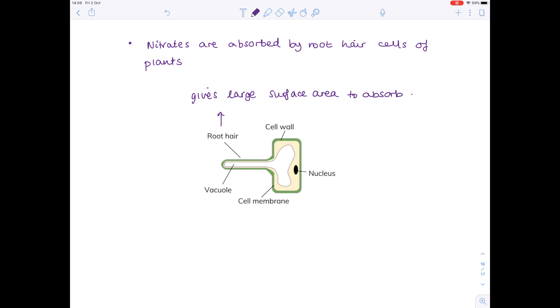The nitrates present in the soil are absorbed by plant roots, specifically the root hair cells. Now the root hair cell gives a very large surface area for absorbing as many of those nitrates as possible, and because they're moving from an area of low concentration to an area of high concentration, they're going to be entering that plant by active transport.